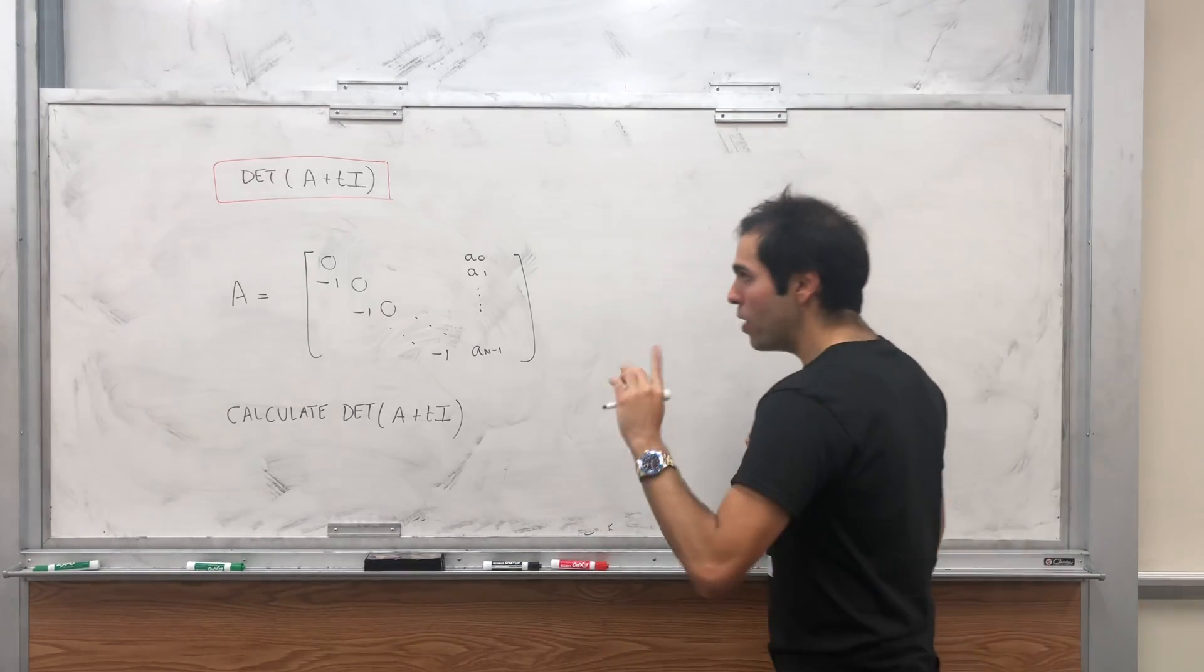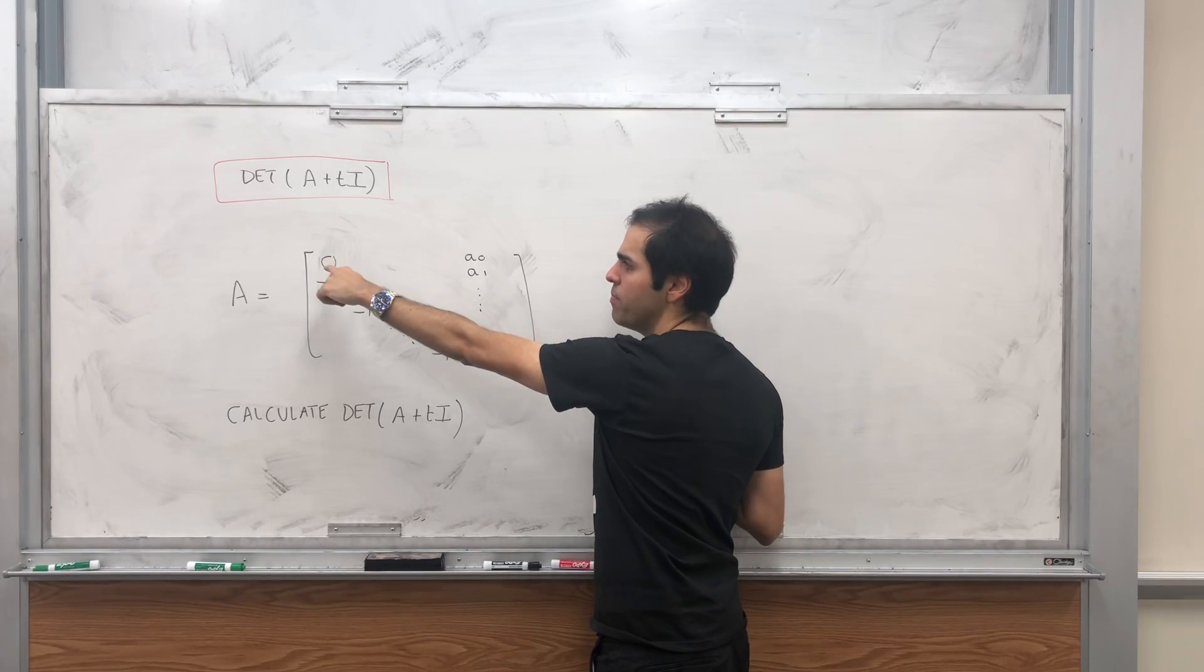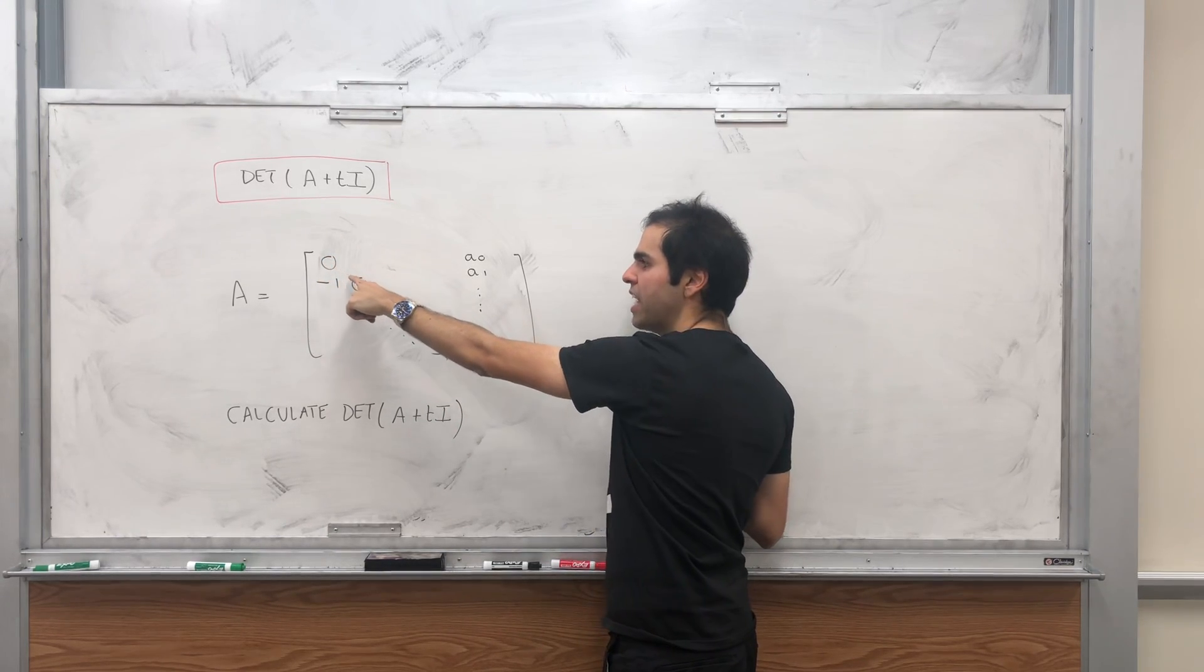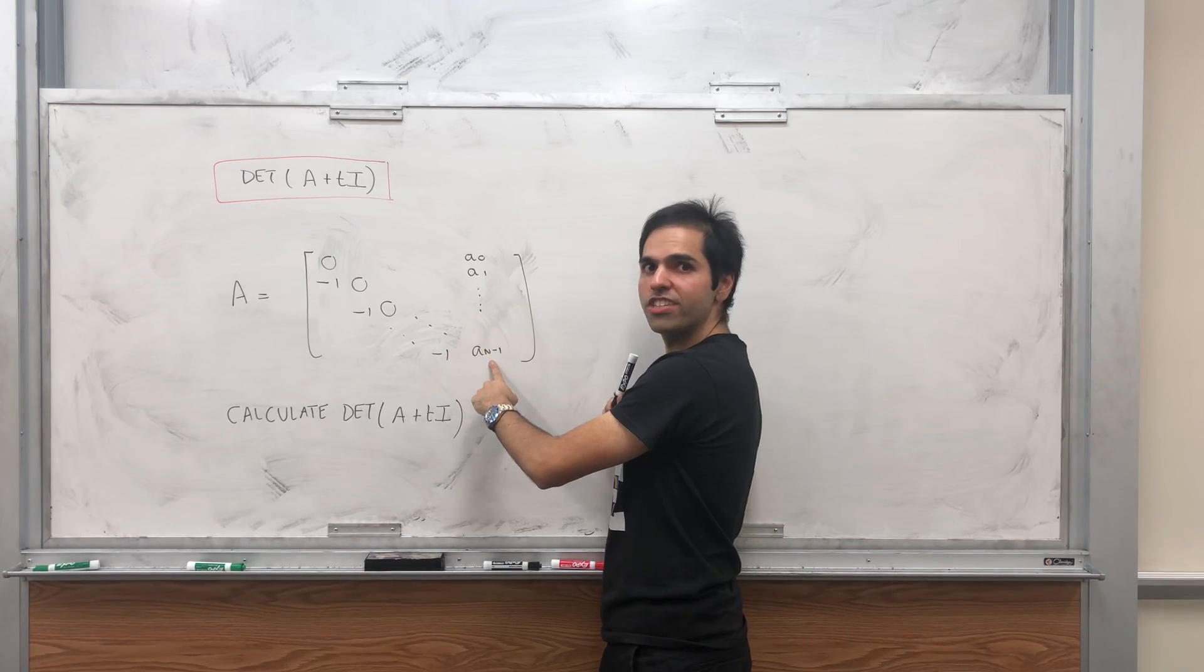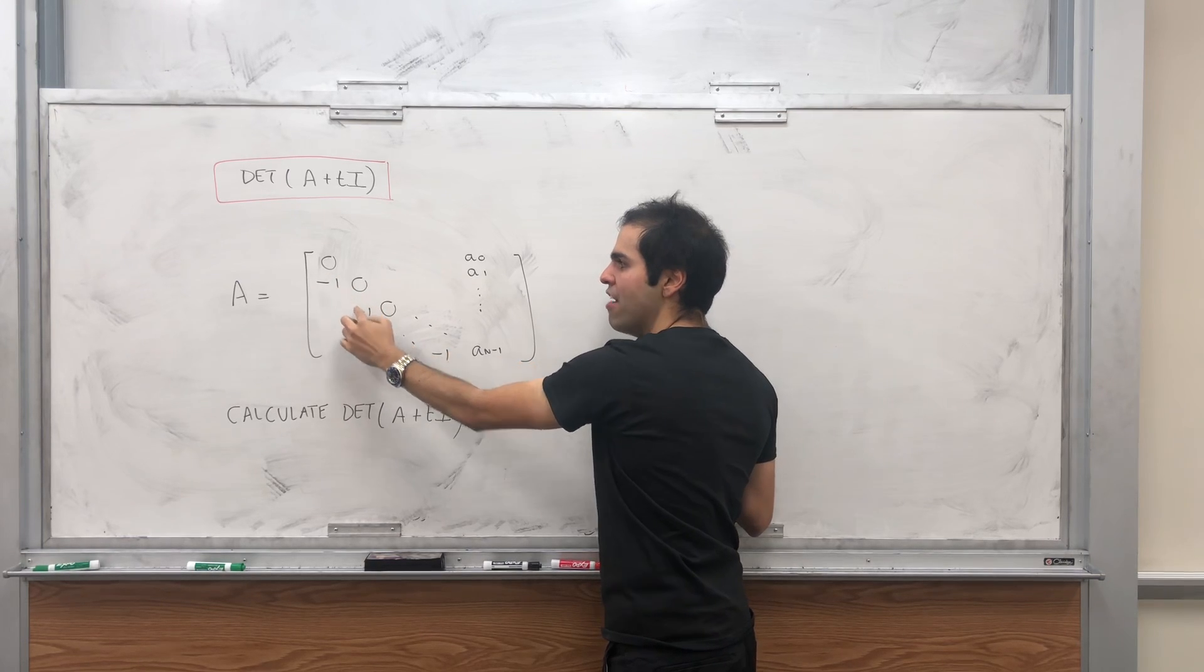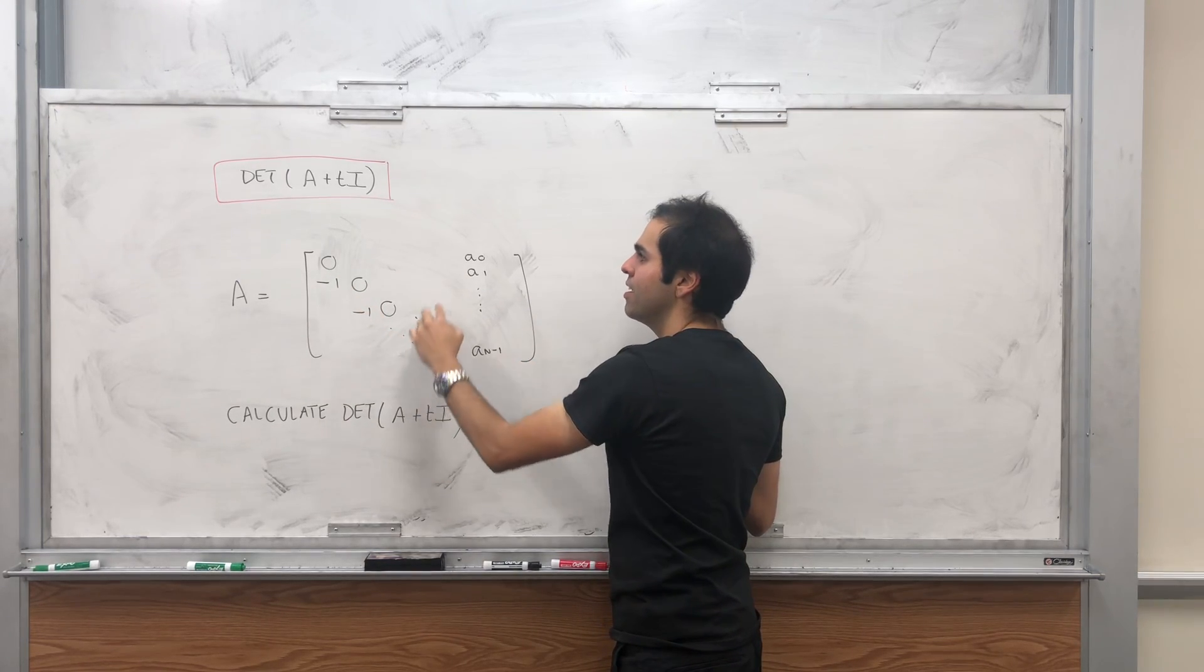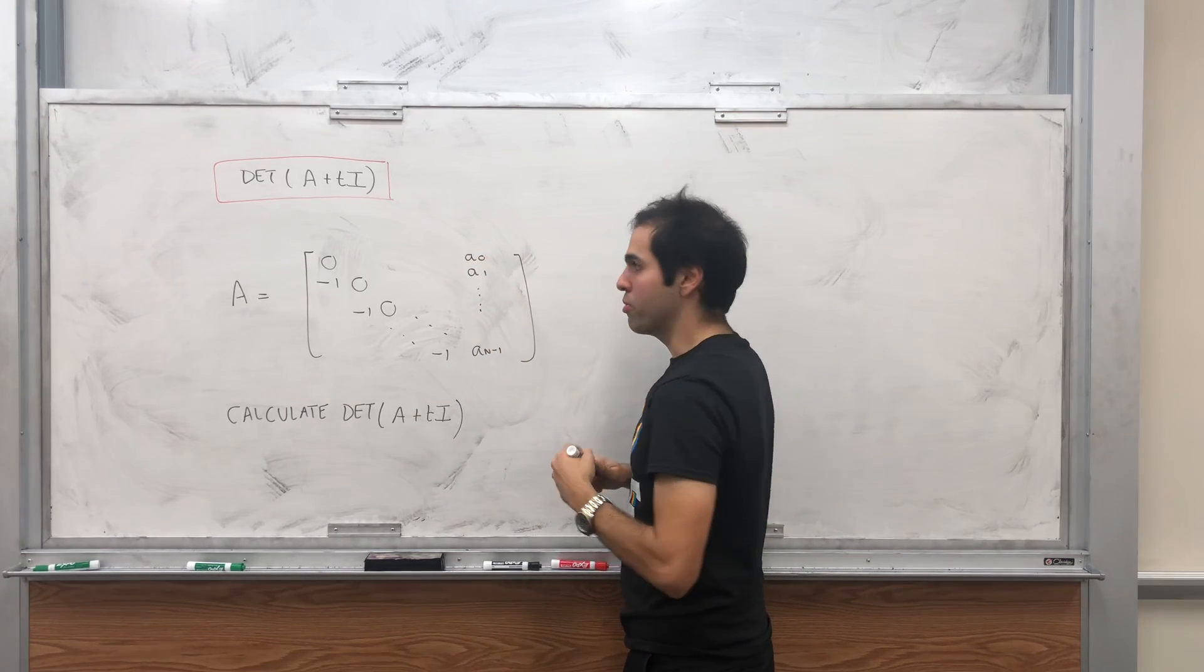Namely, suppose A is the following matrix. It's kind of weird because the way the matrix is defined, on the diagonals it's 0 except the last term which is A_{n-1}. Below the diagonal, everything is minus 1, and on the last column we just have arbitrary real numbers.